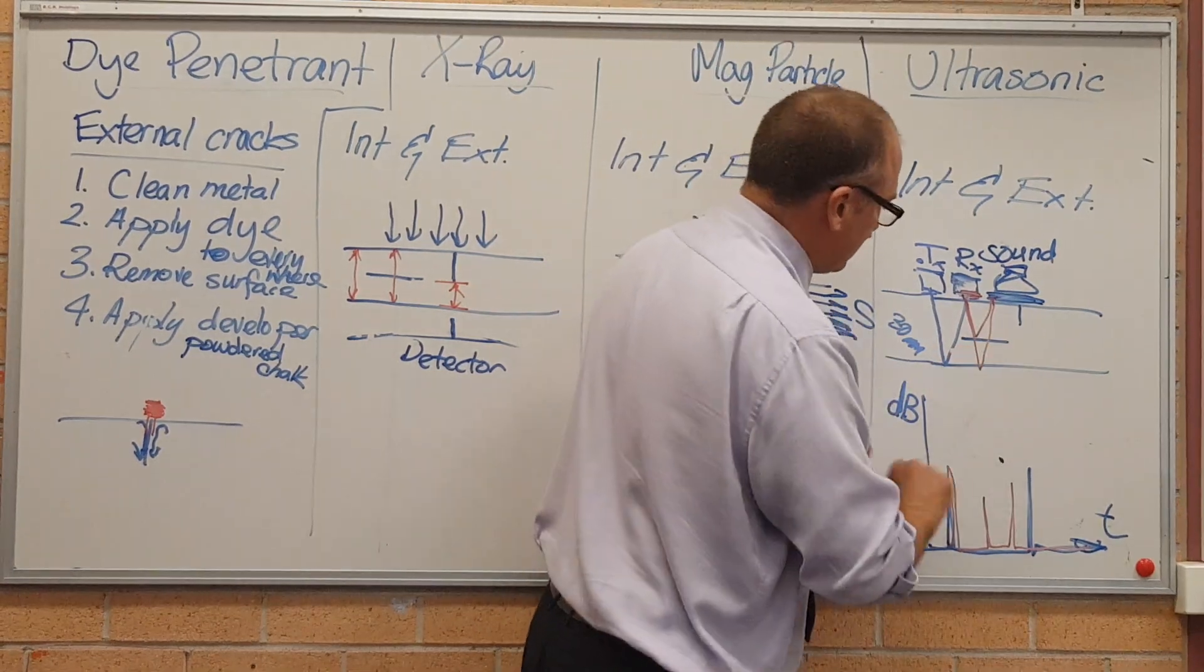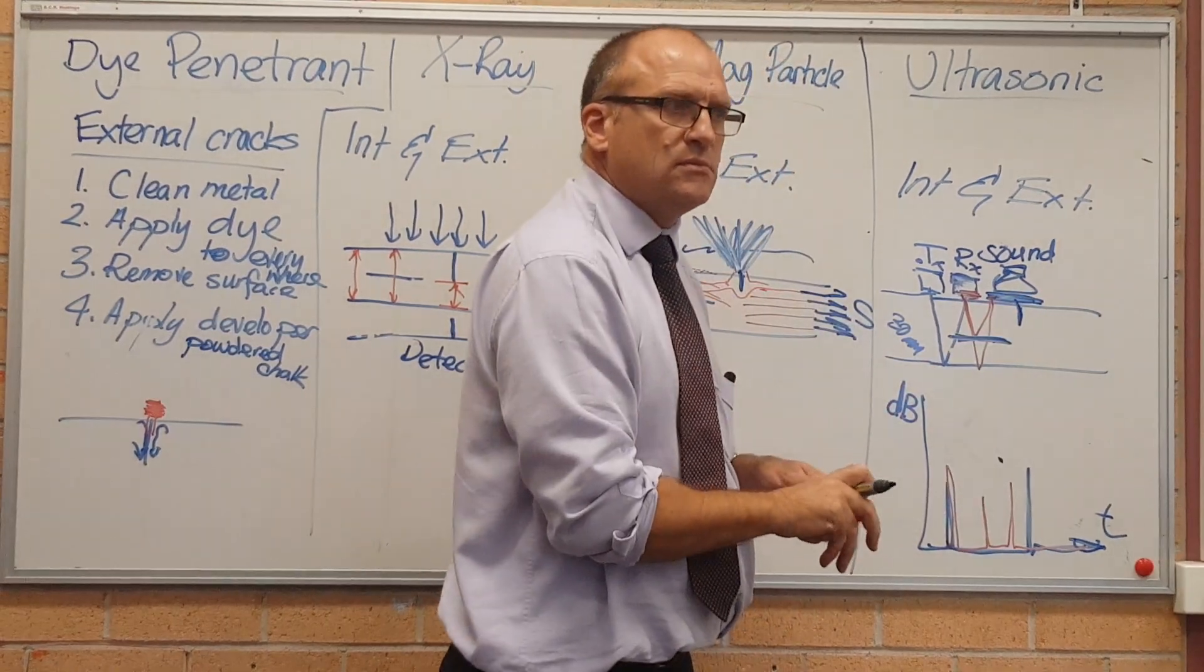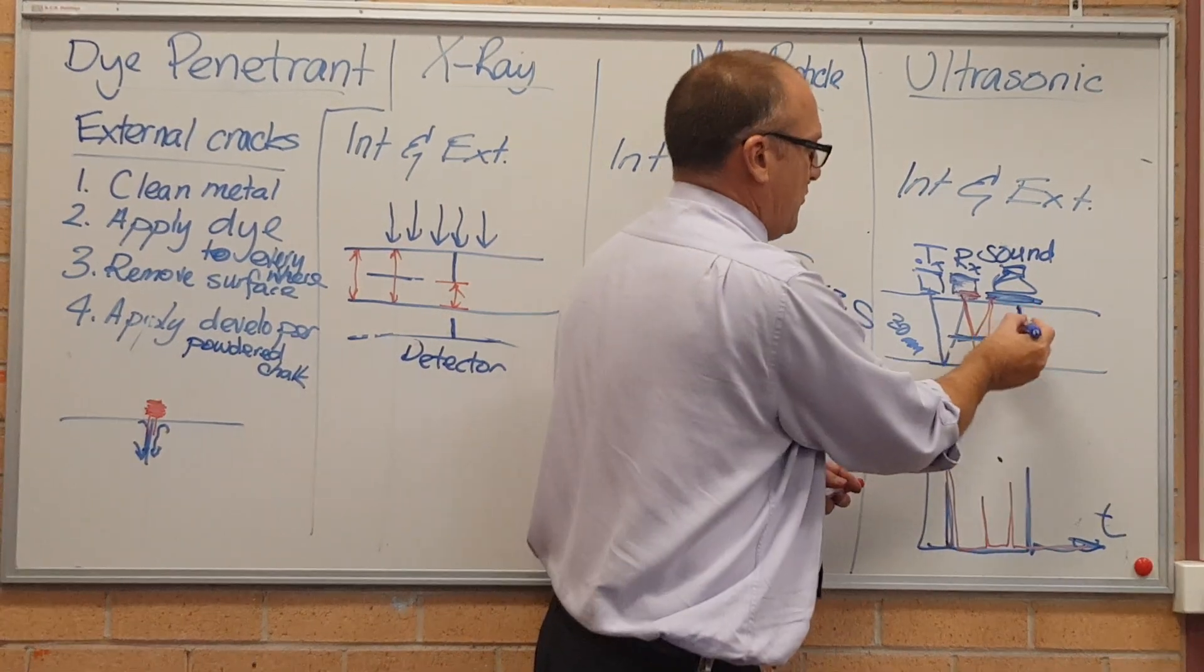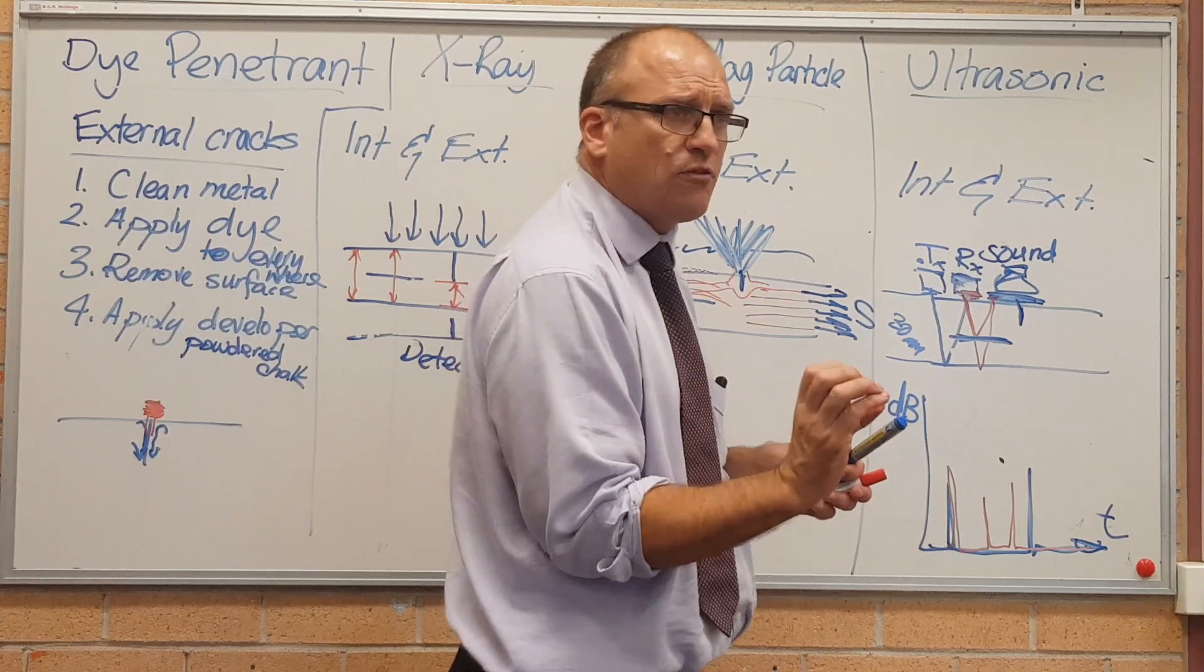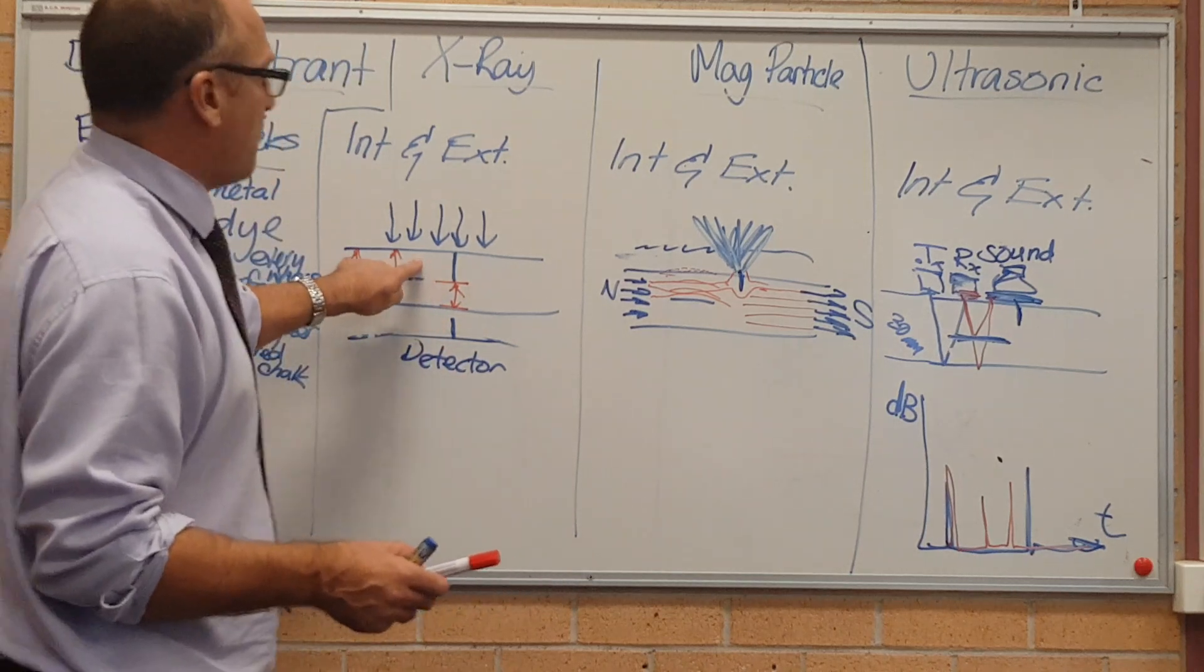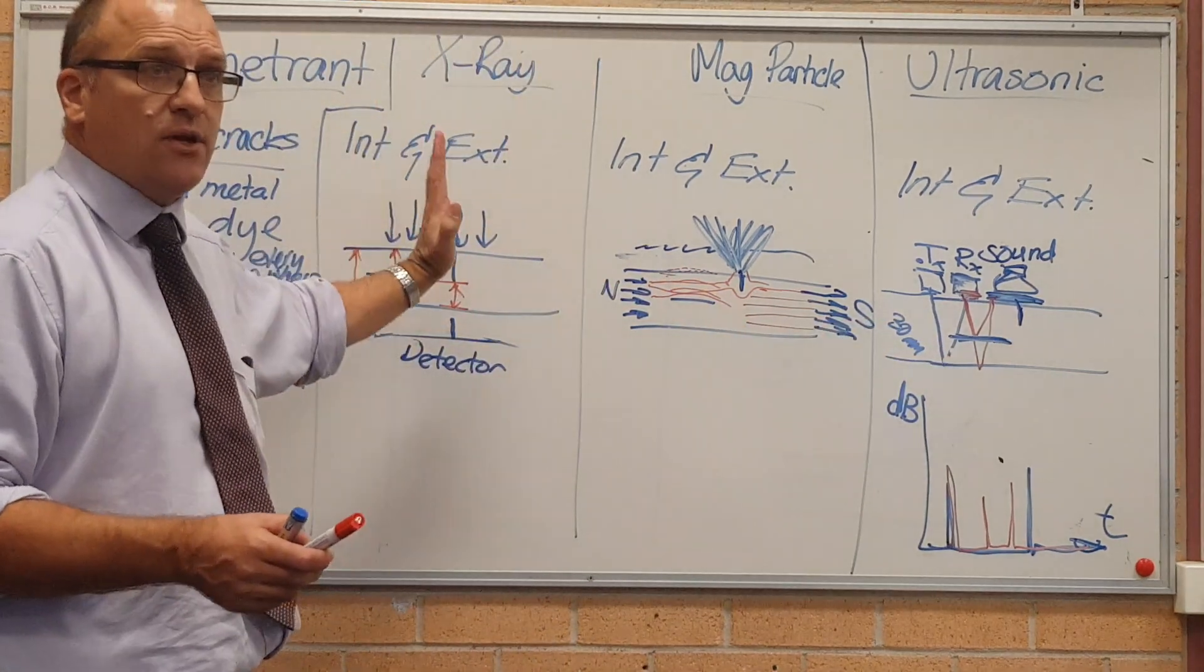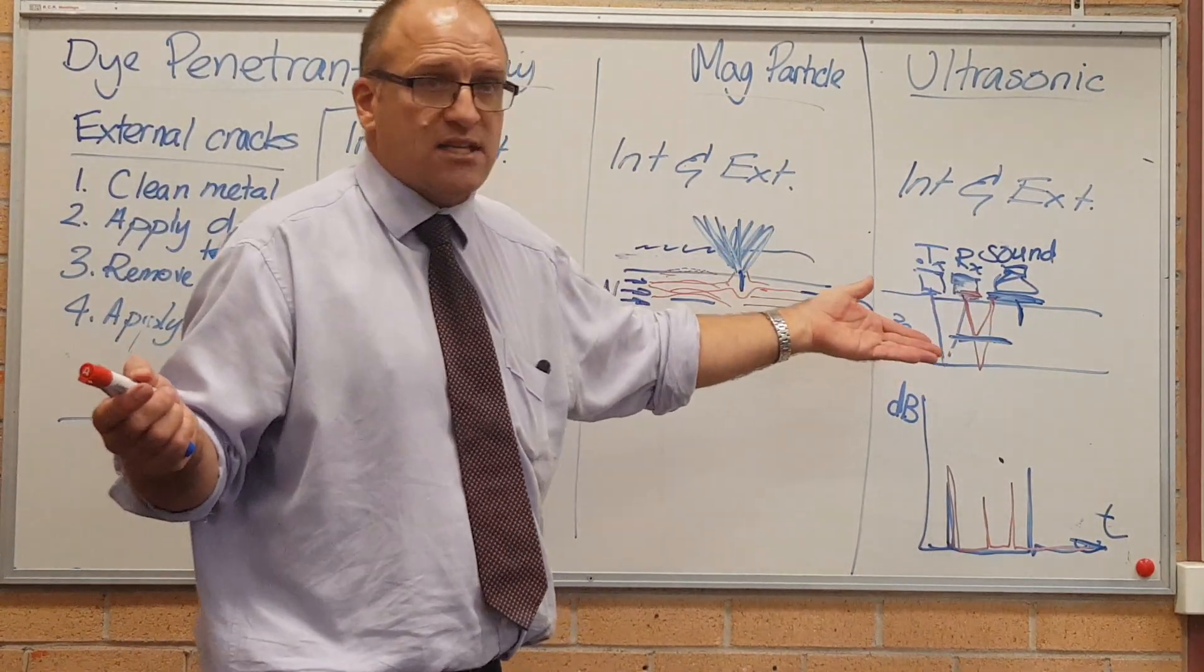Ultrasonics works great for the horizontal cracks. It can't hear the vertical cracks. So the application of the testing method depends on what sort of crack you're looking for. Quite often, to be sure, they'll say do an X-ray and an ultrasonic. It's got to pass both. If it passes an X-ray and an ultrasonic, the X-ray finds the vertical cracks, the ultrasonic finds the horizontal defects. If it passes both, then it's probably good.